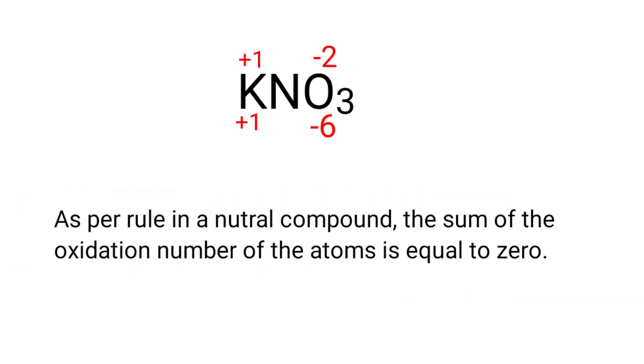As per rule in a neutral compound, the sum of the oxidation number of the atoms is equal to zero. So the numbers along the bottom must add up to zero. So the number under N must be plus five. So we can write the oxidation number of nitrogen is plus five.